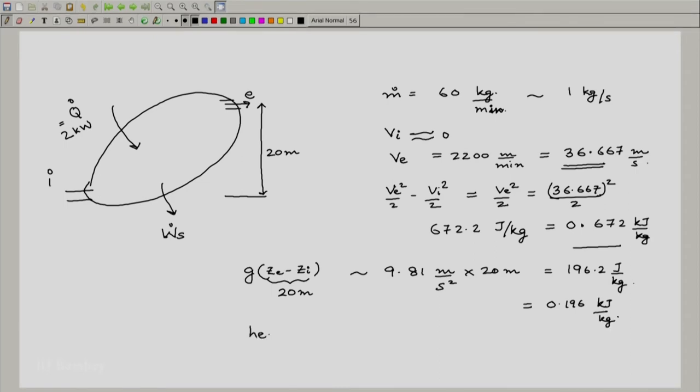H e minus z i has been given. It is a reasonably large number. It is 7.8 kilojoule per kg. It is not as large as in turbines. It is a reasonably small number. It is not of the order of 100 or 200 or 900 and hence,